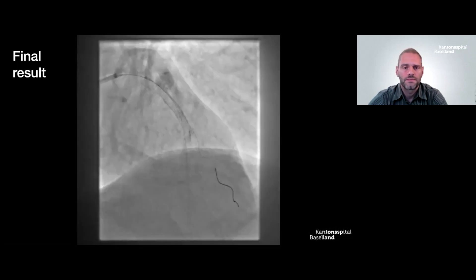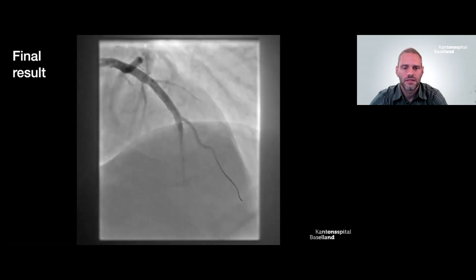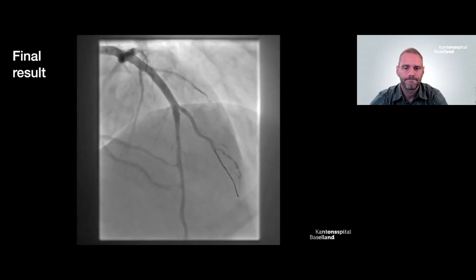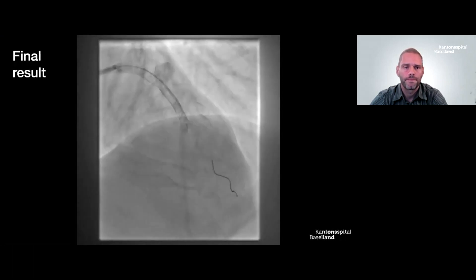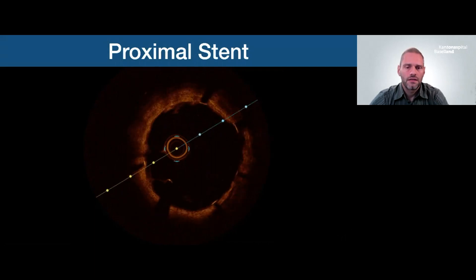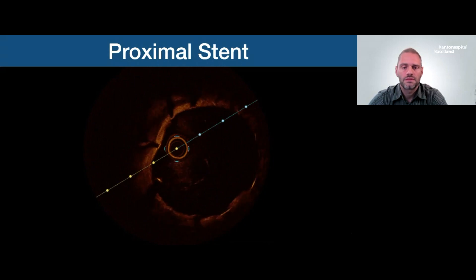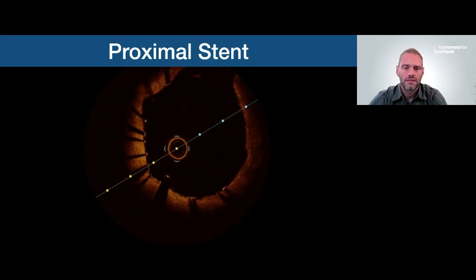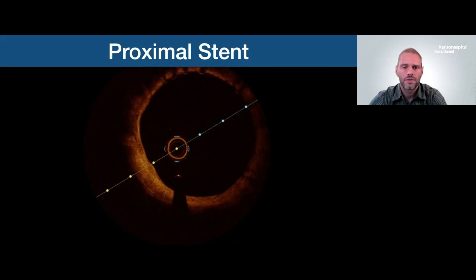The final angiographic result shows the first diagonal, which is small and was chronically occluded, a very nicely stented main branch, and a feasible result in the second diagonal. OCT of the proximal end of the Megatron, where longitudinal compression happened, confirmed a nicely well-expanded stent with all struts apposed to the wall through to the proximal end.